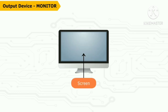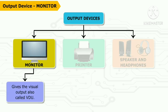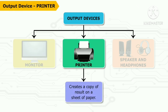Output devices are those parts of a computer which display results after processing the given input. For example, the monitor, also called the visual display unit, is the most important output device — it displays whatever is typed. A printer creates a copy of the result displayed on the monitor on paper, called a printout or hard copy.